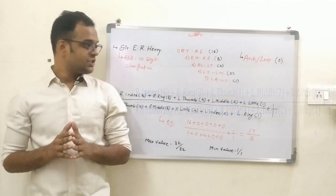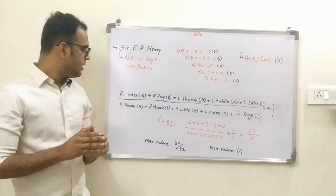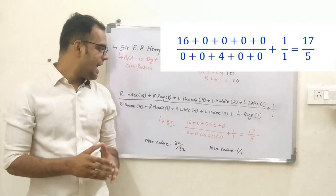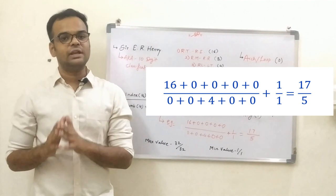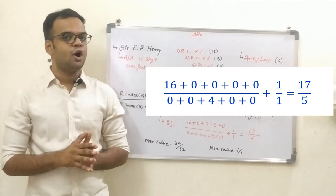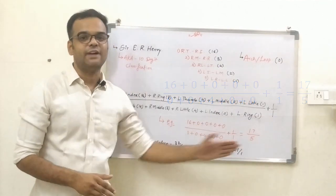The fraction thus obtained is the primary classification. For example, if the right index and right little are having the whorl pattern and all other fingers are having either arch or loop pattern, then the primary classification is 17 by 5.